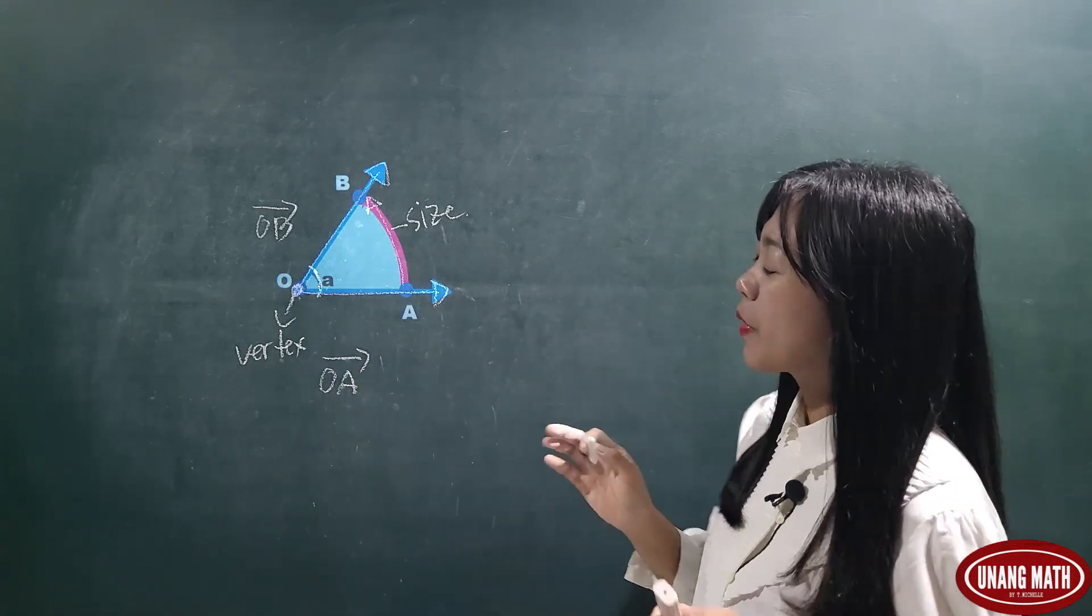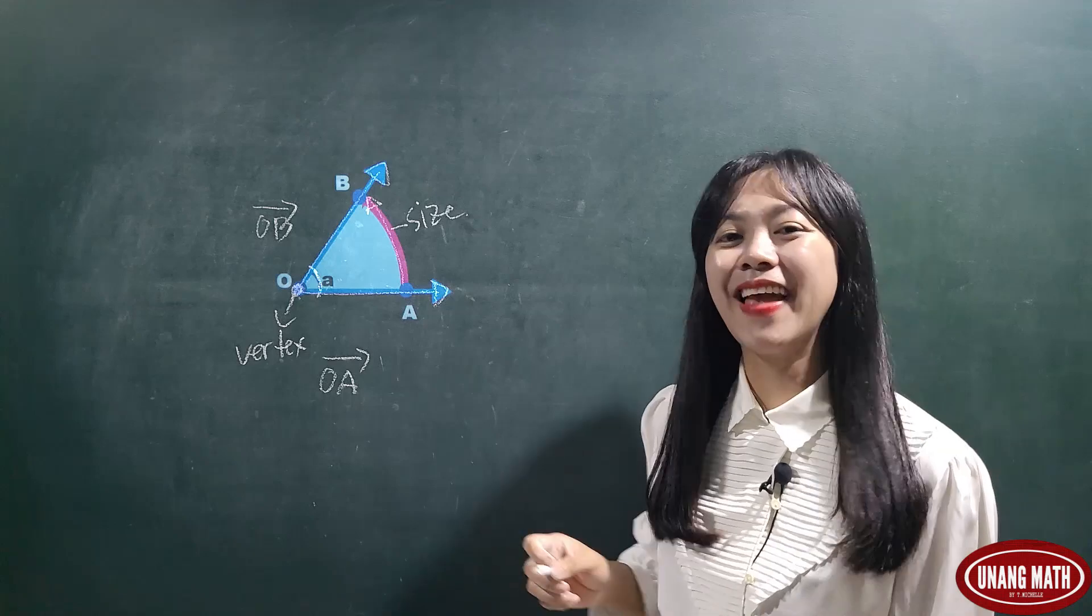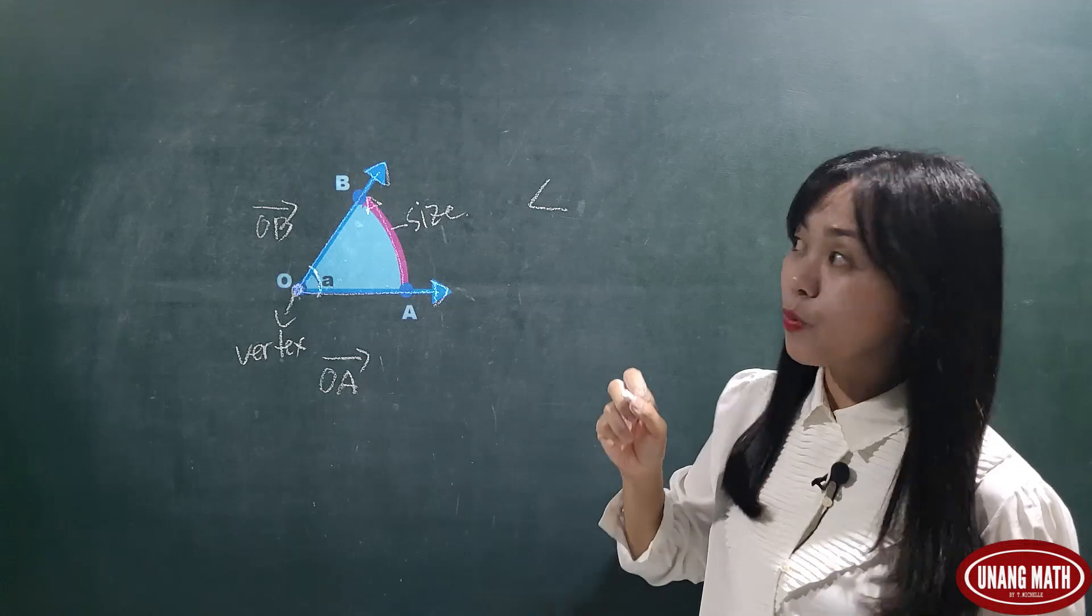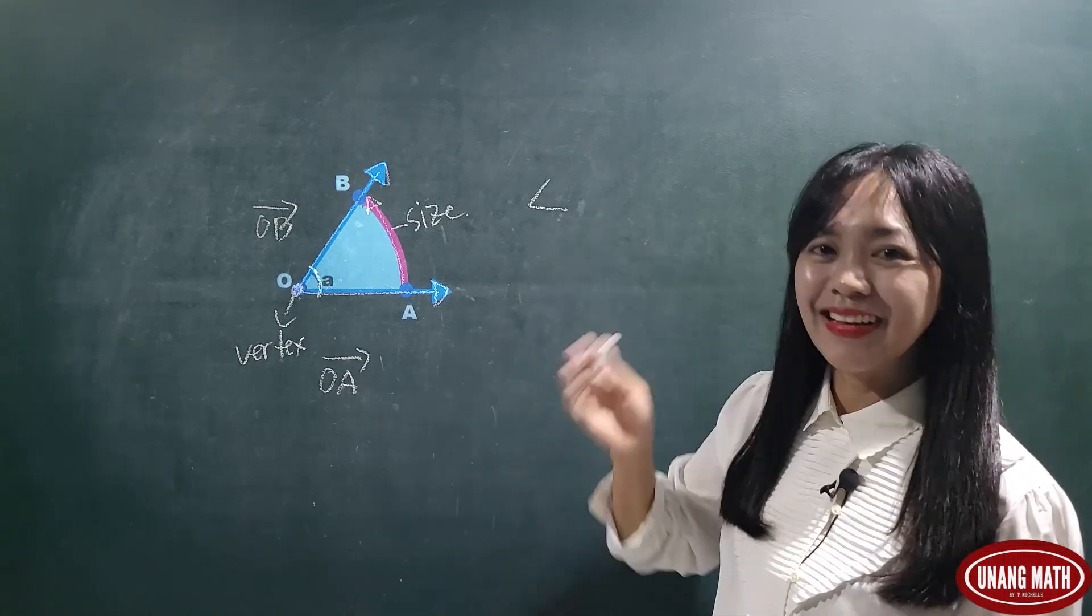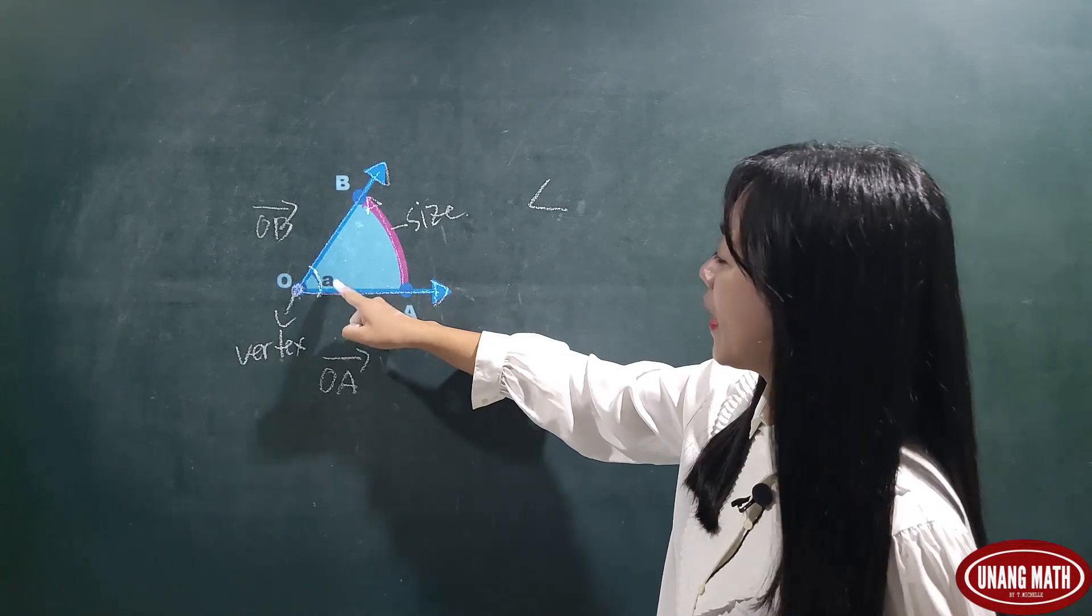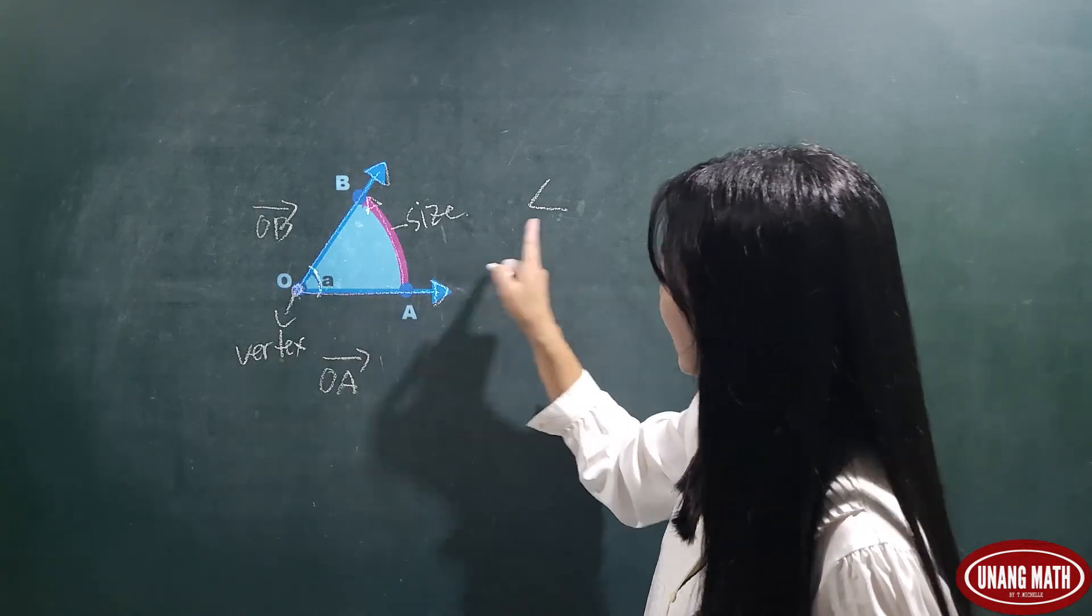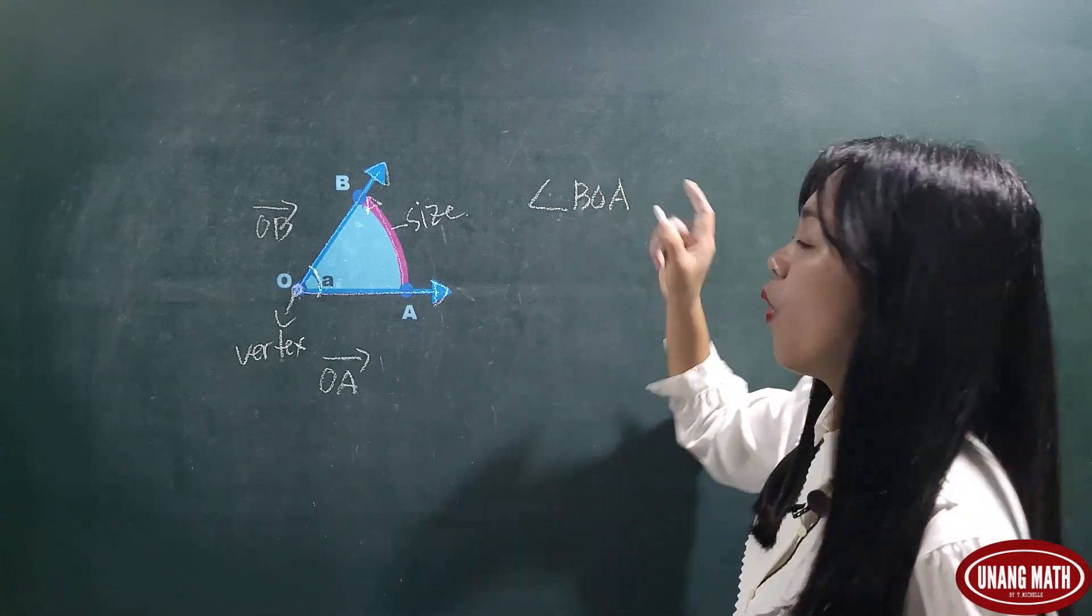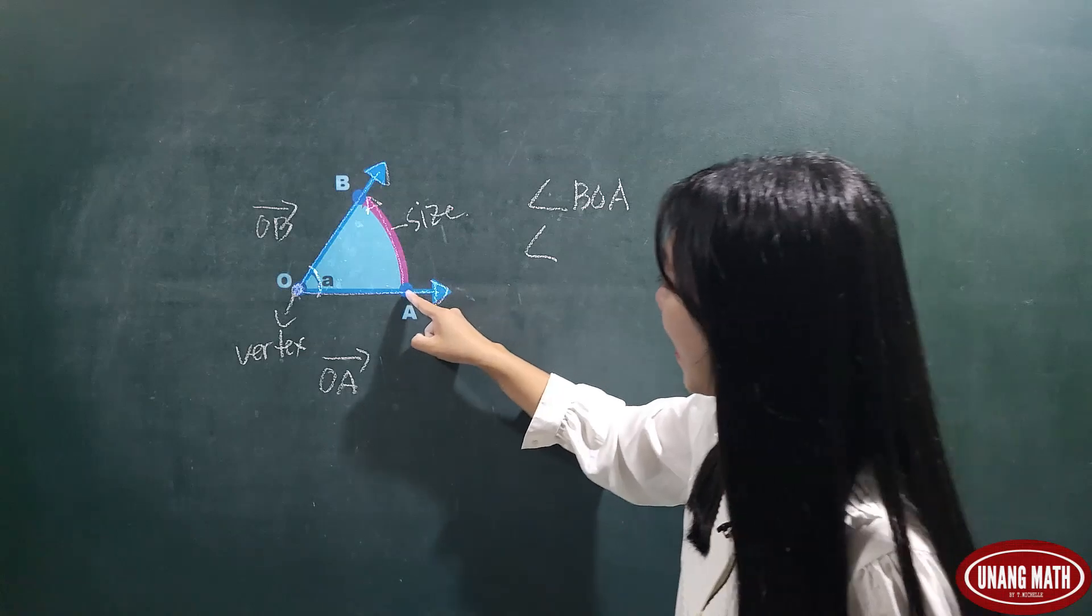Okay, now, how are we going to name this angle? The symbol for angle is this symbol. And we will read this as angle. We can name this angle as angle BOA. So, angle BOA. Or angle AOB.